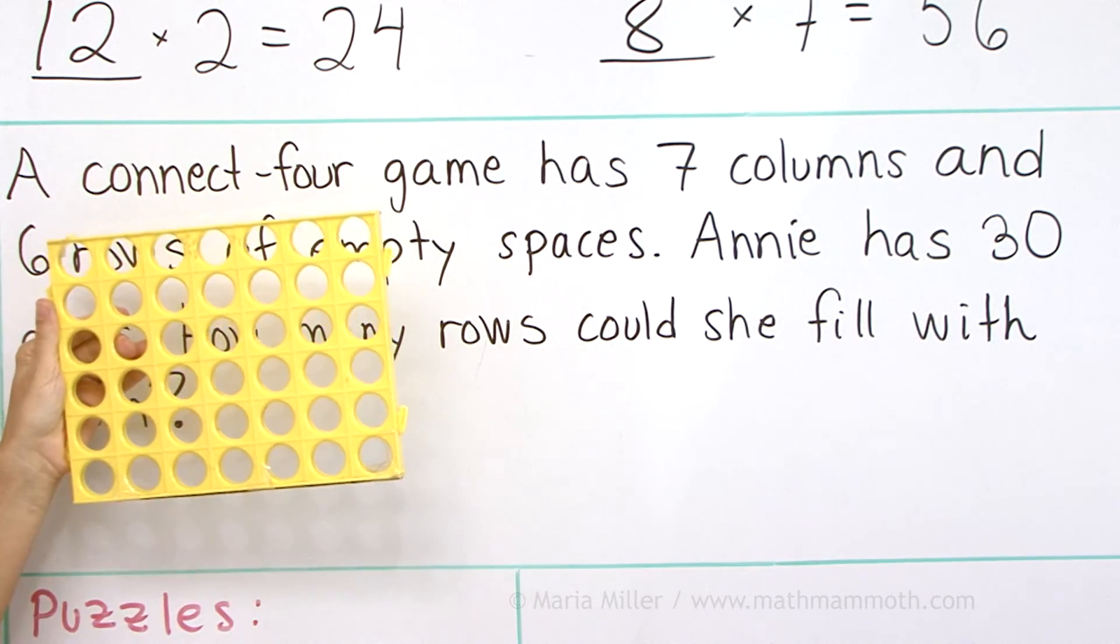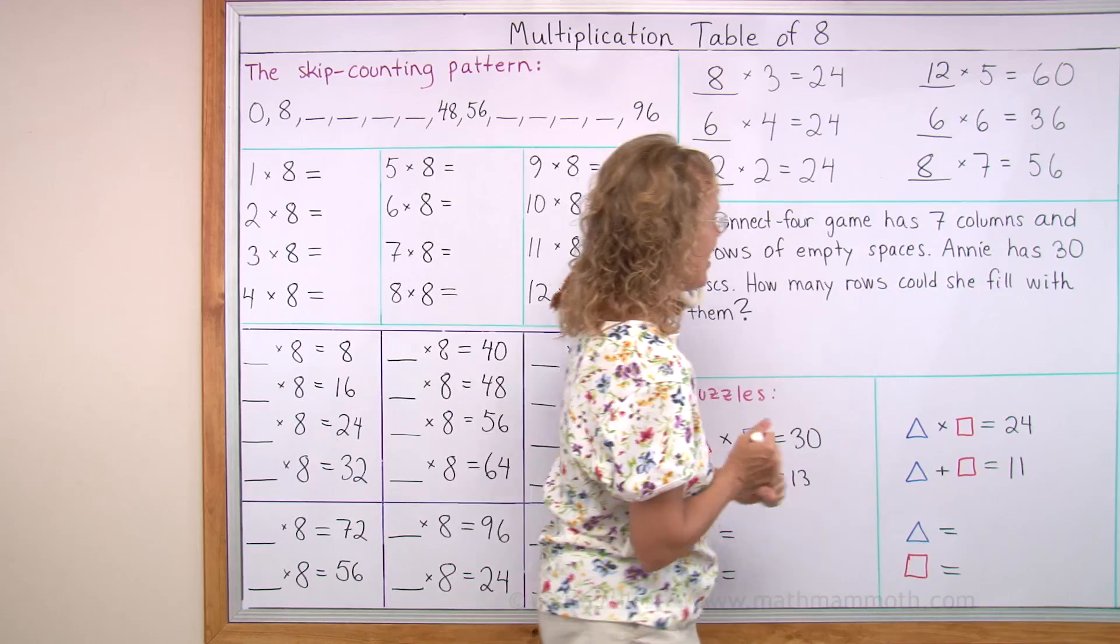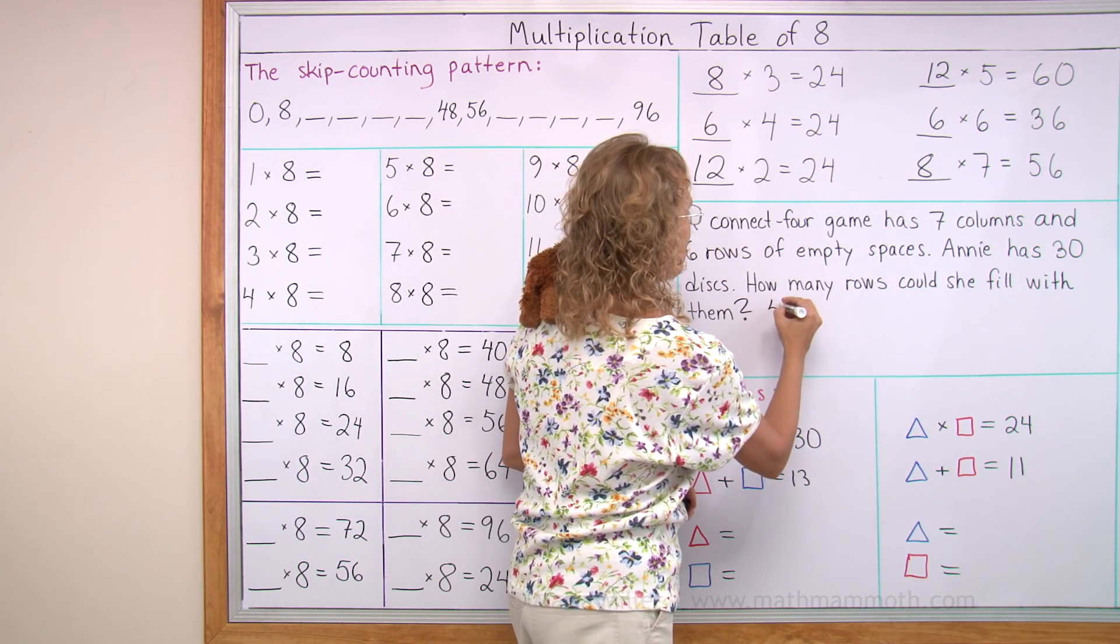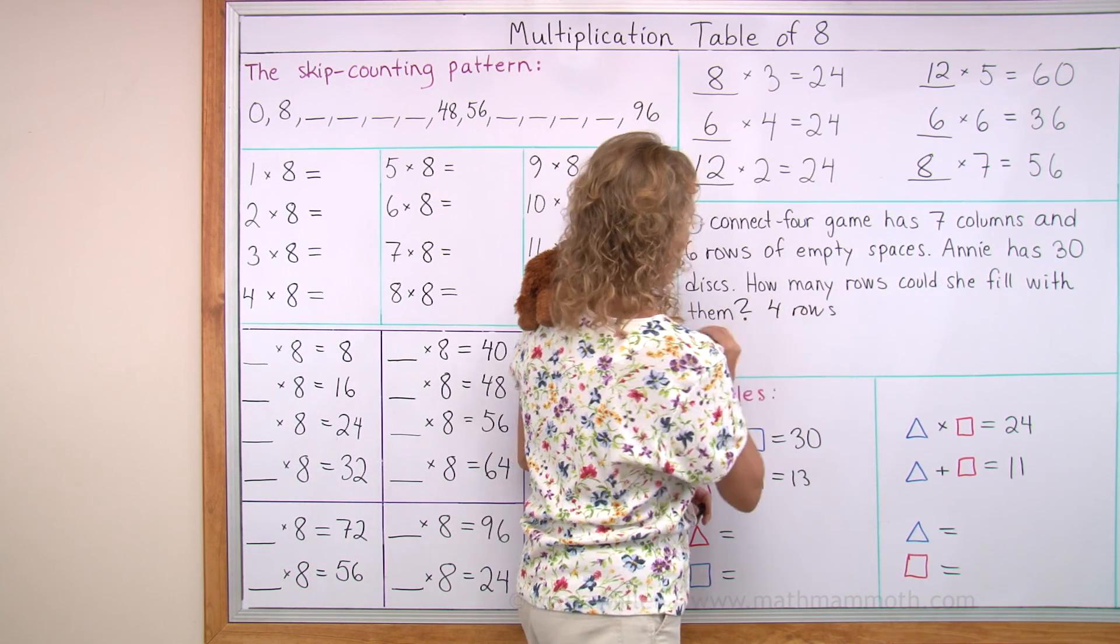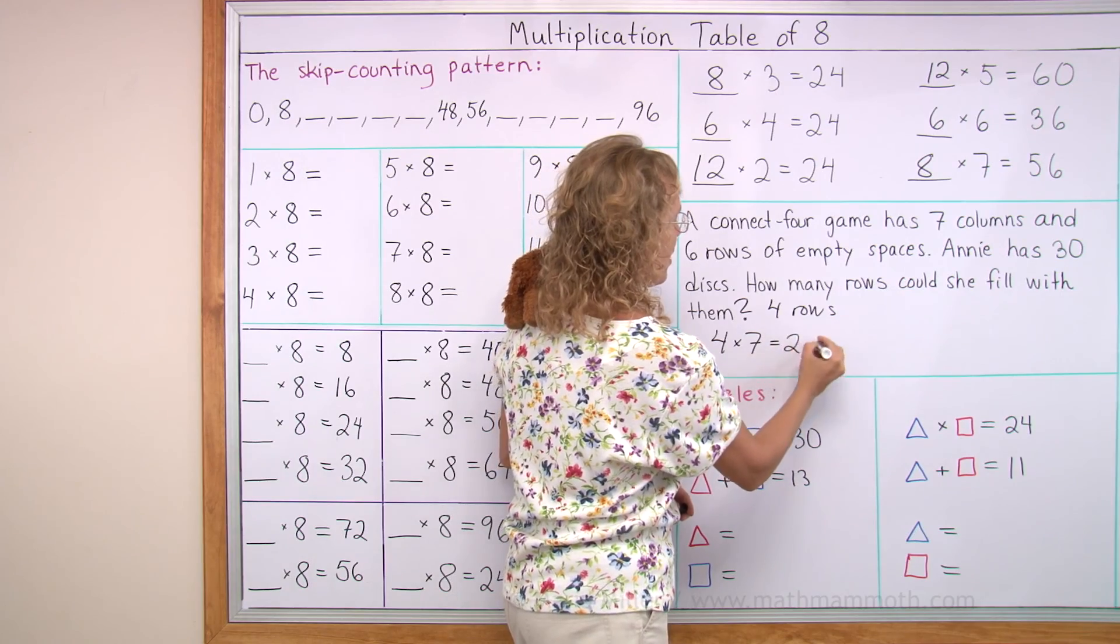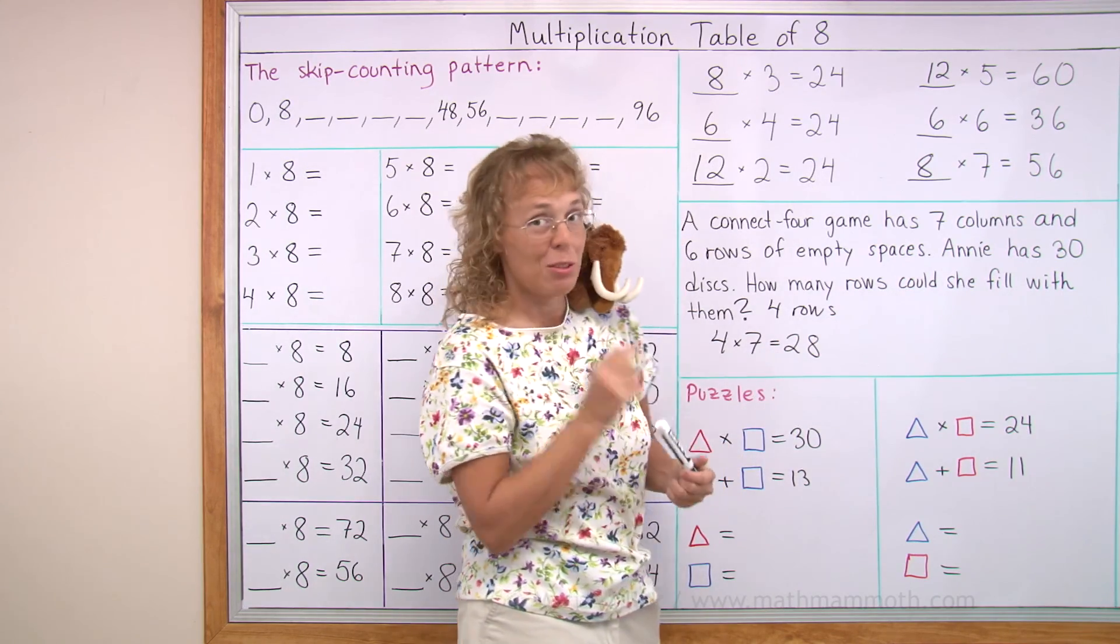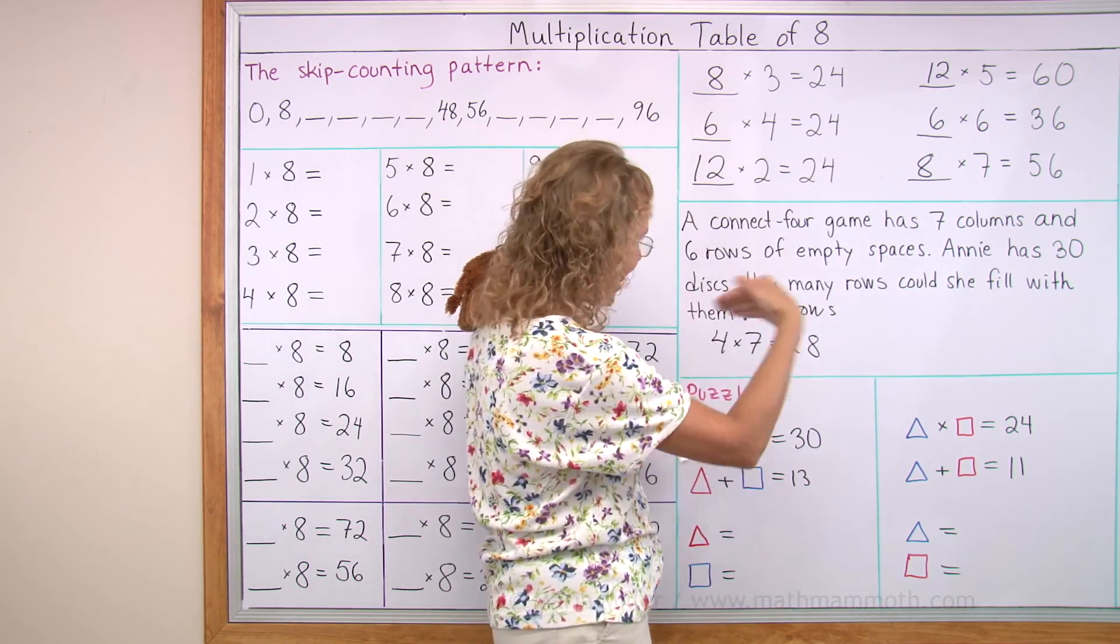And then 29, 30. So how many could she fill? I'm sure you saw the answer. 4 rows. 4 times 7 equals 28. And then there was 2 discs for the next row.